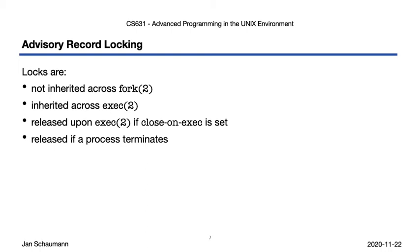That again makes sense and is desirable — we don't want a file to keep a lock if the process that applied it has terminated. But there's one thing where we run into a situation that's neither obvious nor actually desirable. A lock is associated with a file for a given process, not with a file descriptor for the specific file, and it is released if any file descriptor for the file is closed.